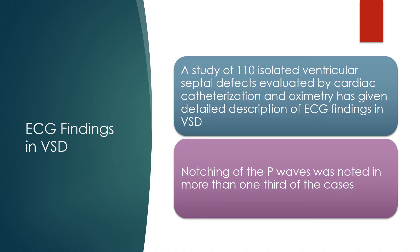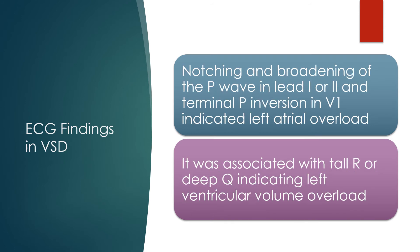A study of 110 isolated ventricular septal defects evaluated by cardiac catheterization and oximetry provided detailed ECG findings in VSD. Notching of the P waves was noted in more than one third of cases. Notching and broadening of the P wave in leads I or II, and terminal P inversion in V1, indicated left atrial overload.